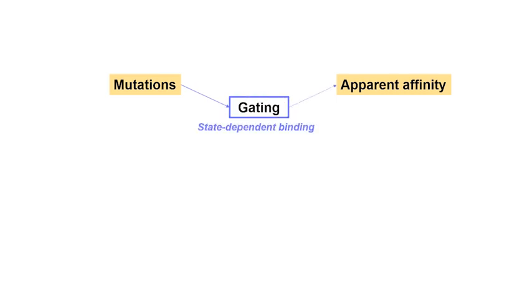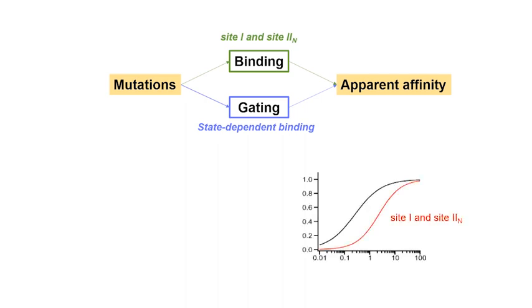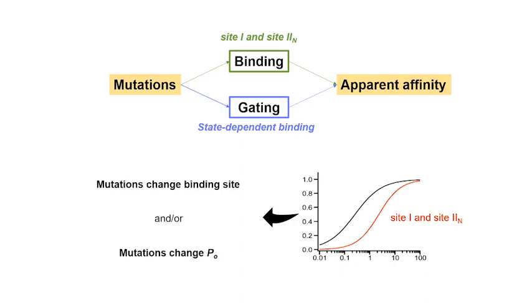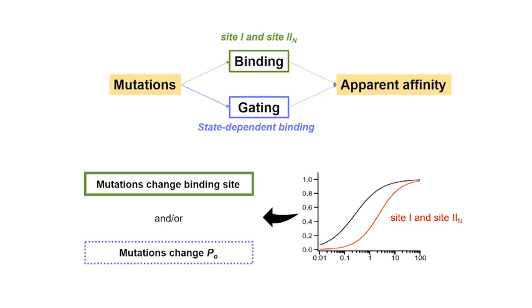As described earlier, due to state-dependent binding, a change in the apparent affinity for the potentiators could result from a difference in open probability rather than a change in binding site structure. In other words, a shift in dose-response relationships or any change in the apparent on- and off-rates for mutations could be a result of changes in either binding affinity or open probability. As detailed in our report, after taking this potential caveat into consideration and examining the open probability of several mutations in both sites, we reached the conclusion that the observed change in apparent affinity cannot be fully explained by a simple change in open probability. Instead, it is likely that mutations indeed affect the binding of the potentiators.